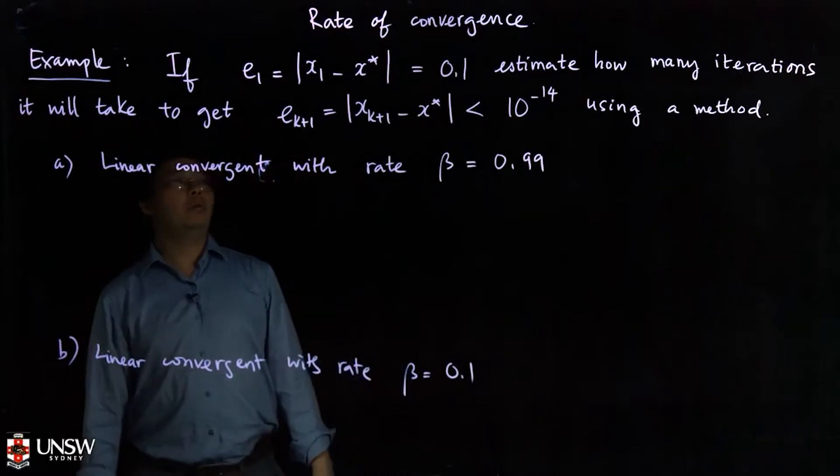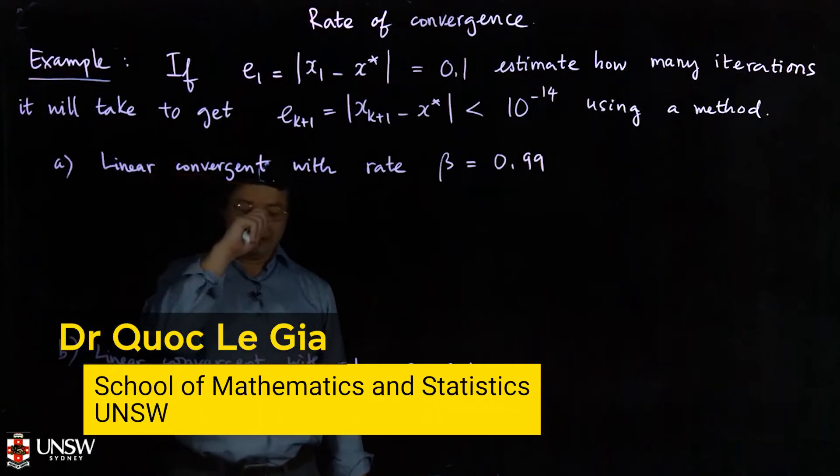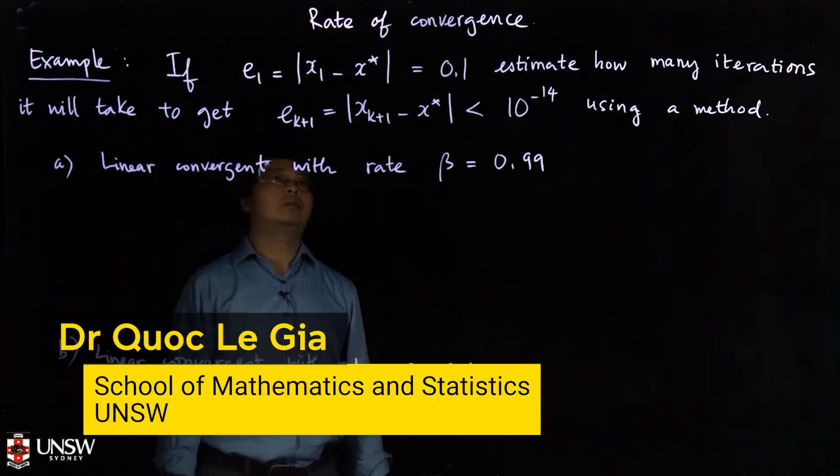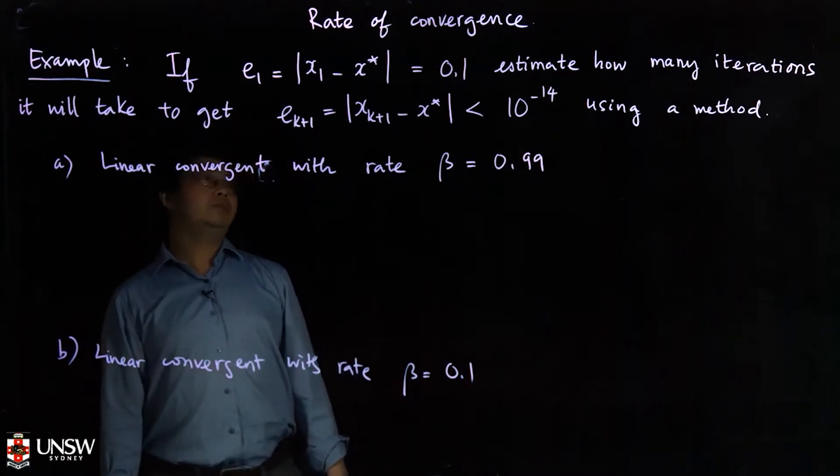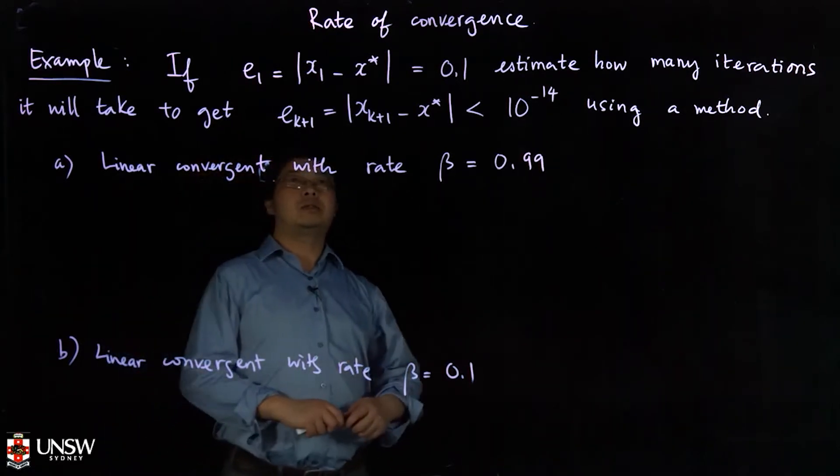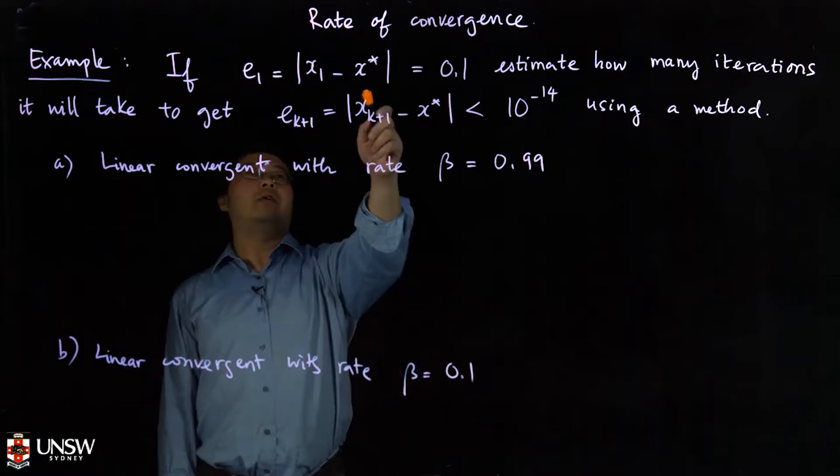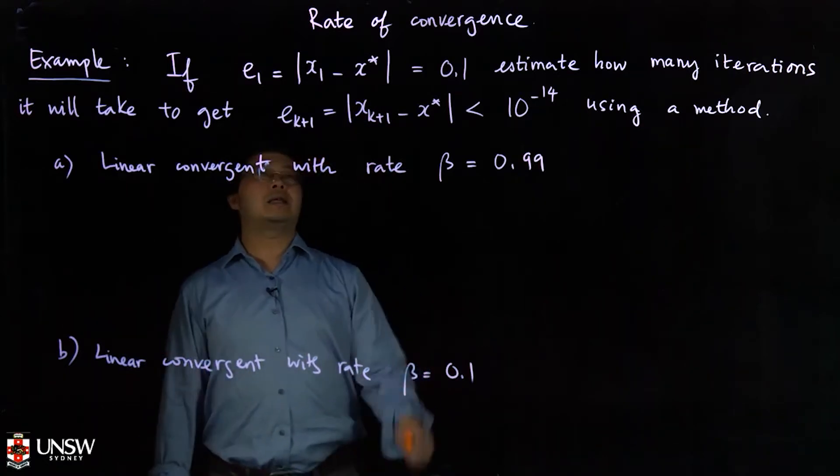Okay, so now we've talked about iterative methods. Now what we want to discuss today is the rate of convergence. So what do I mean by that? Suppose you have iterative methods and X star is the exact solution.